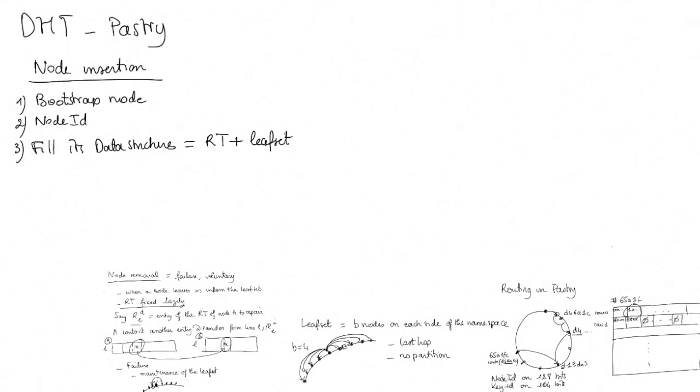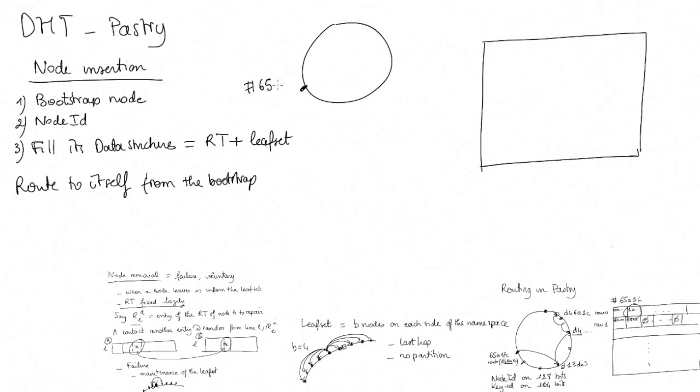In order to fill the data structures, the node is simply going to route to itself from the bootstrap node. Say the bootstrap node is 65A1FC and the node got as a node ID D46A1C. It's going to route a message to that destination. When it contacts the bootstrap node, this is the occasion for the node D46A1C to fill its routing table. The first thing it will do is take exactly the same entry as row 0 of node 65A1FC.